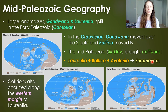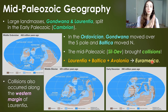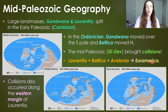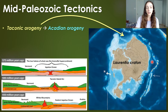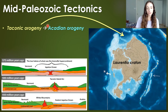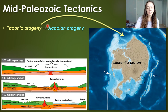Also during this time period in the Middle Paleozoic, the western margin of Laurentia — or what was about to be Euramerica — was also undergoing collision and mountain building events. Getting to the orogenies that accompanied collisions along the eastern margin of Laurentia soon to be Euramerica: we had the Taconic orogeny that occurred in the Early Paleozoic, which we discuss in the Early Paleozoic geology video.